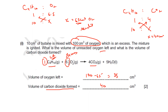Why did we not use oxygen to find the carbon dioxide? Because oxygen is in excess and is not completely reacting. That's why we don't find the product from the excess reagent — we always use the limiting reagent to find the final product.